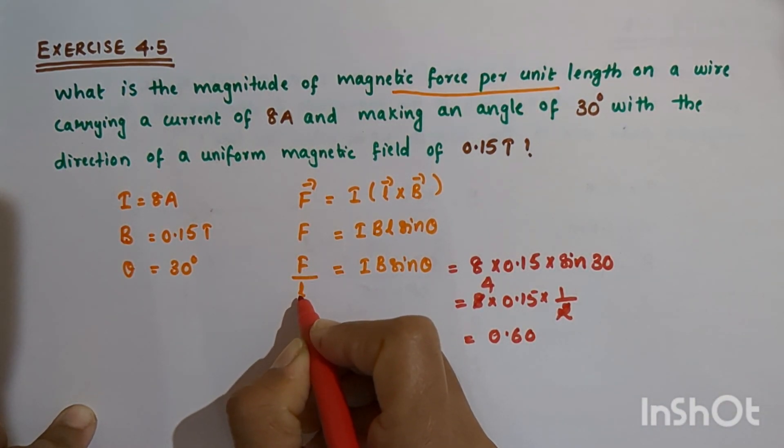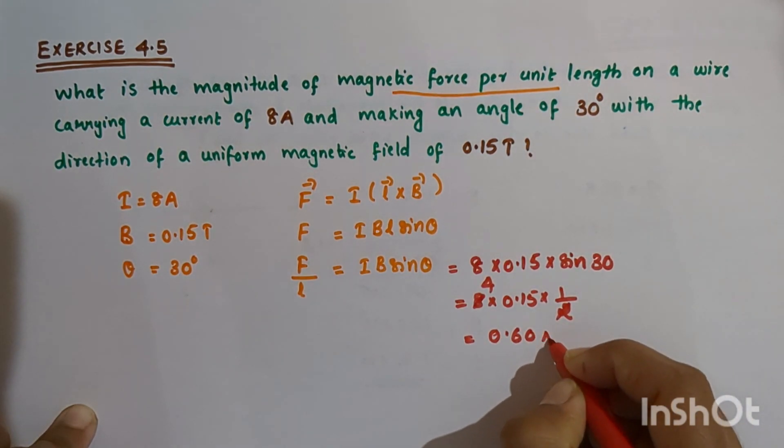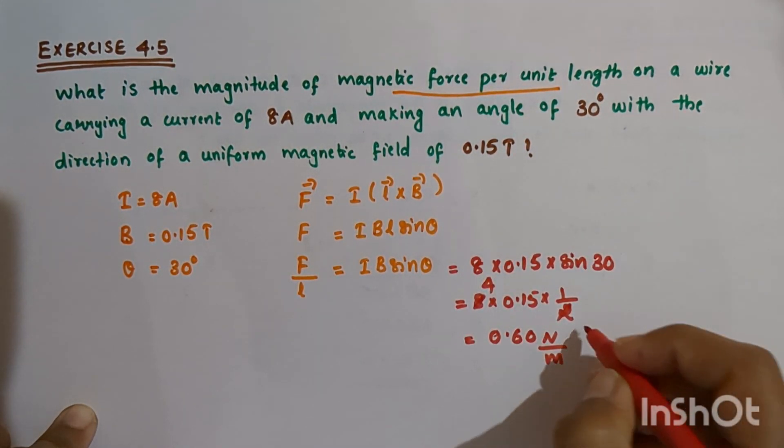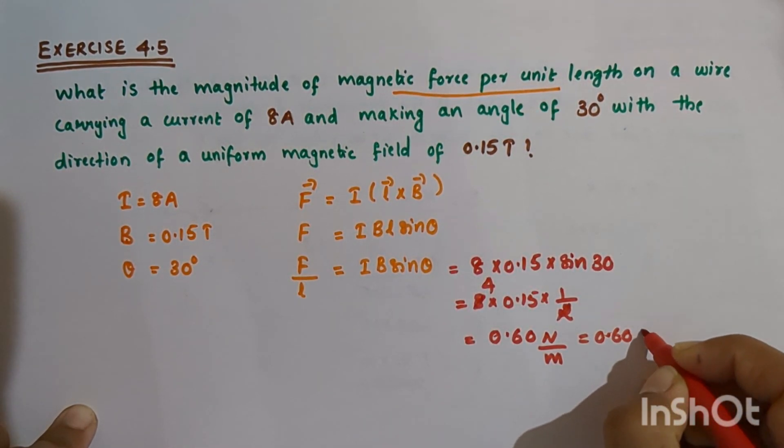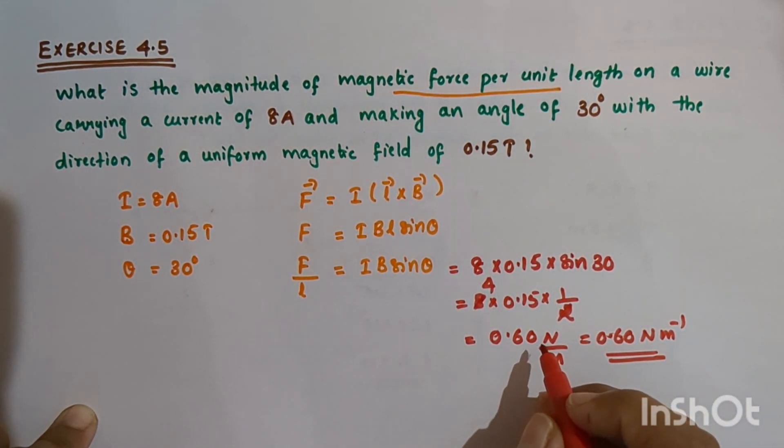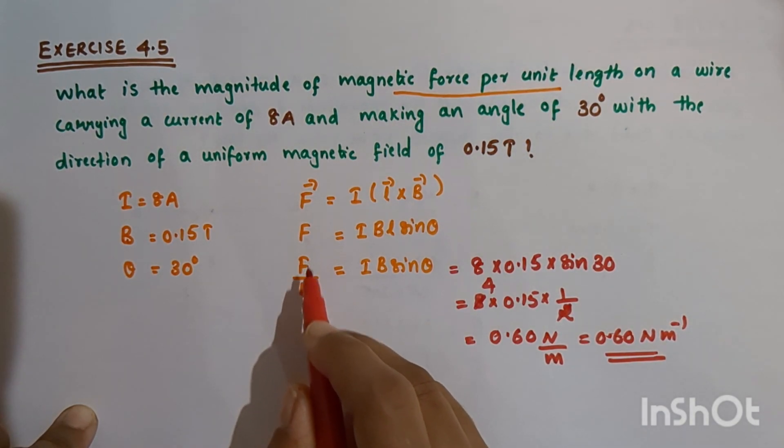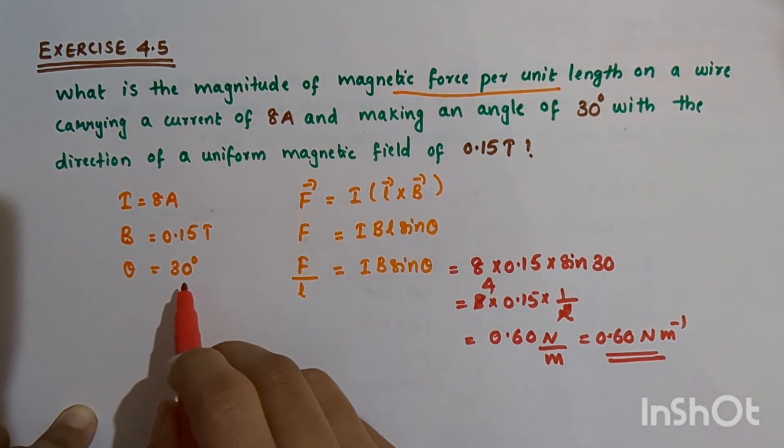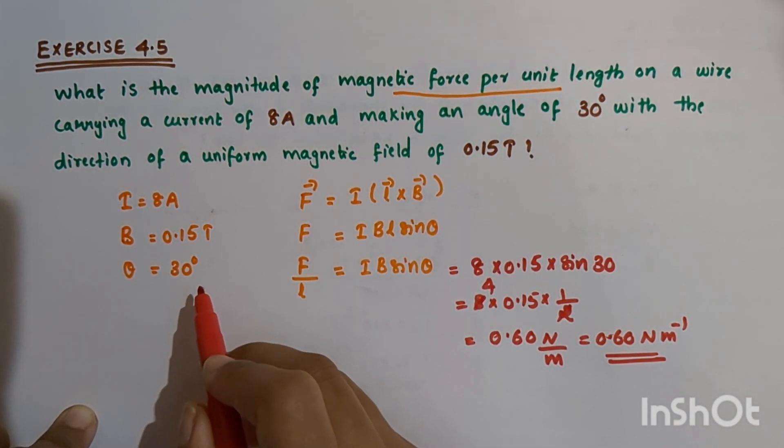The SI unit of force is Newton and of length is meter, so the answer is 0.60 Newton per meter or 0.60 N/m. This is the magnitude of magnetic force per unit length on this wire. I hope it is clear to you. Thank you.